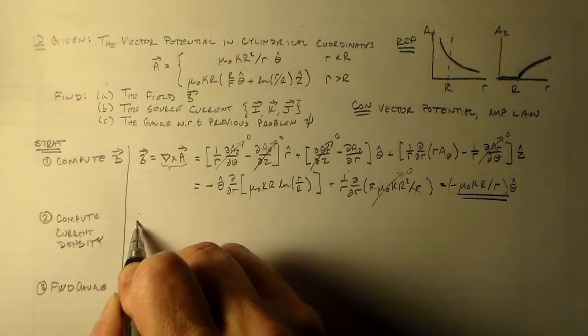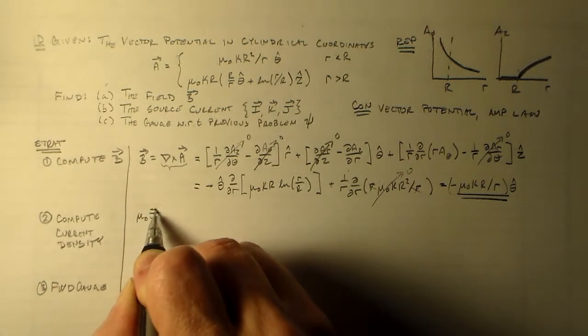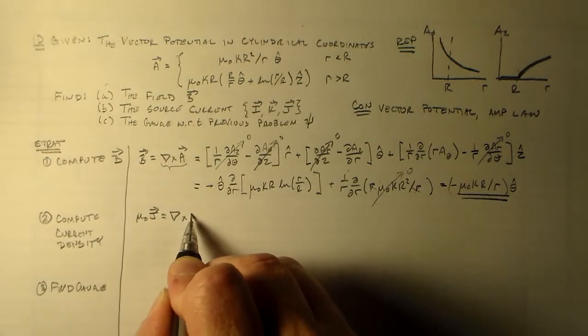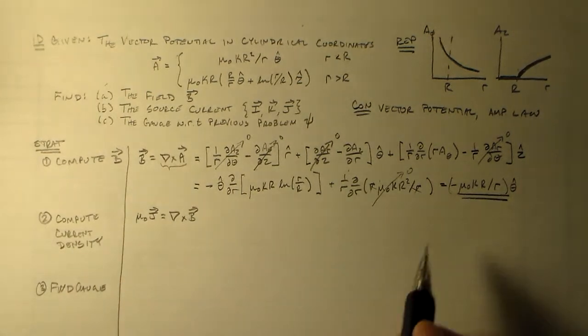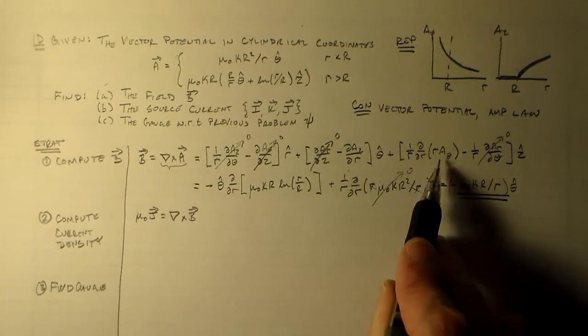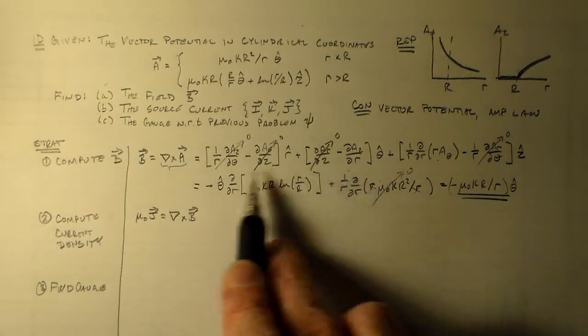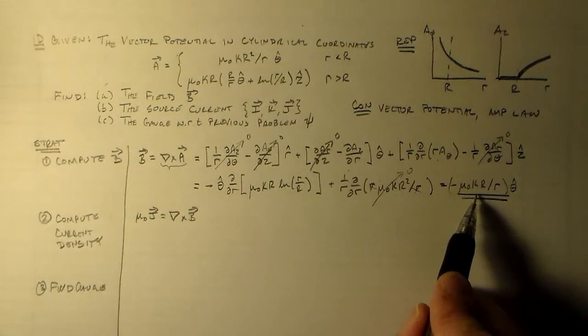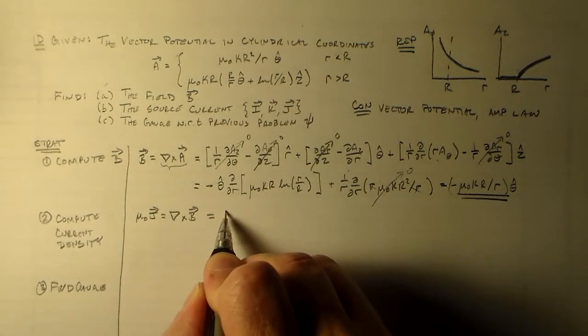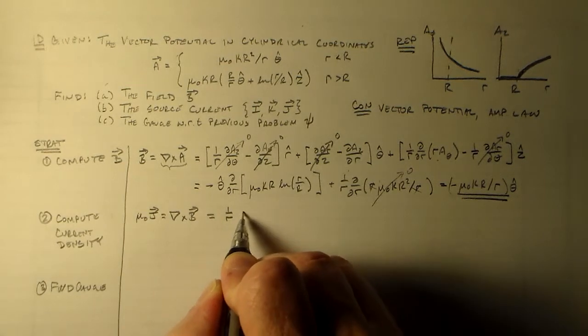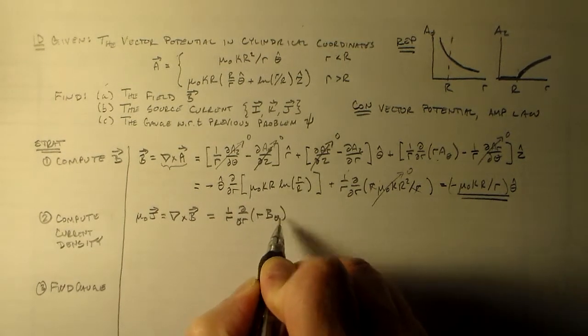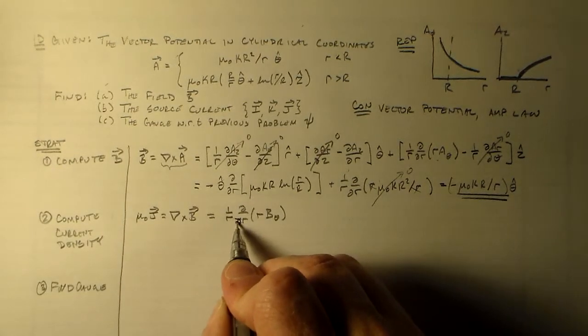Now the current density. We have mu naught j equals del cross B. We only have this one. All the other ones are zero. So we have a theta component. We have one over r d dr of r b theta, that's the only one we have to worry about.